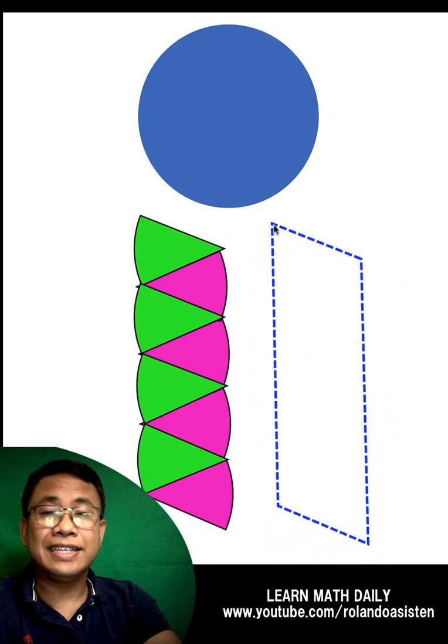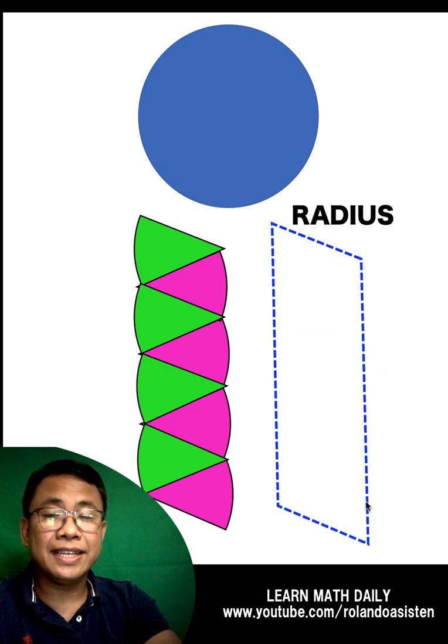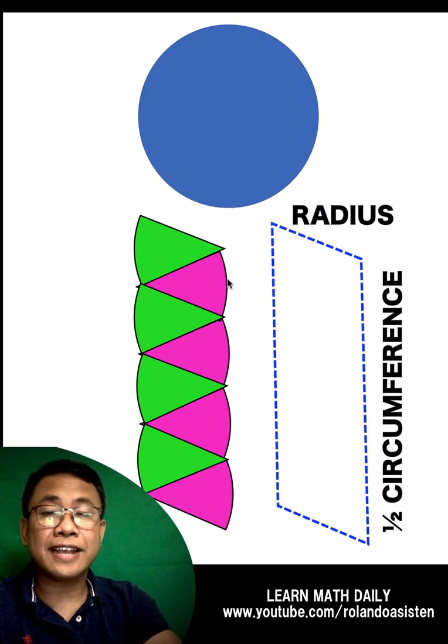Now in this figure, this side of the parallelogram is our radius and this side here is one half the circumference of the original circle. The other half is at the other side here.